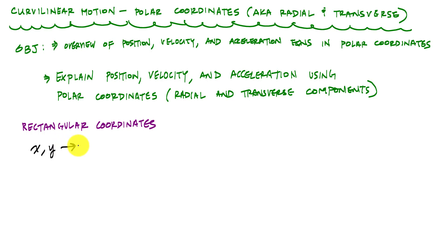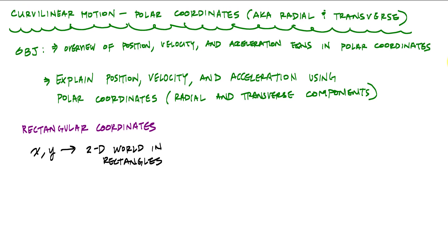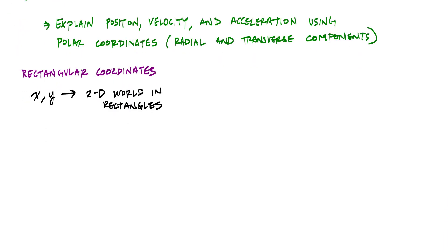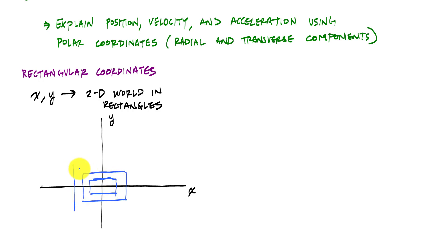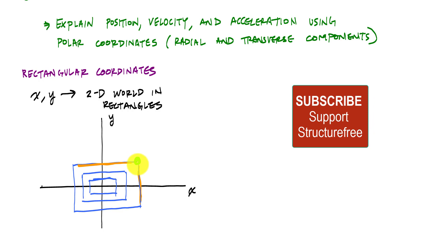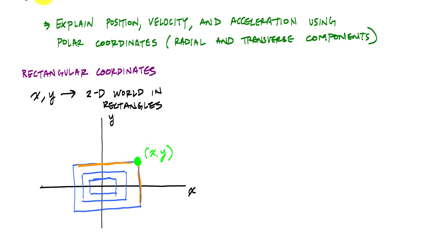More specifically, we're establishing corners of rectangles as our location or position of whatever it is with respect to a reference. When I look at an XY coordinate system, I draw a horizontal and vertical, and the world is broken up into rectangles. When I choose an X coordinate, I'm choosing one of the vertical lines, and when I choose a Y coordinate, I'm choosing one of the horizontal lines. Together, they define a corner of the rectangle. So we establish positive X and positive Y — this is the world we use.